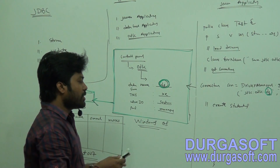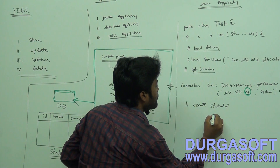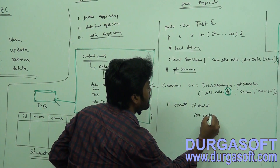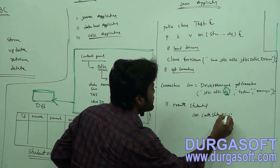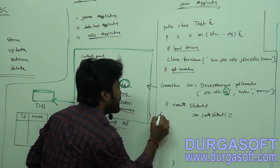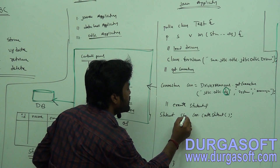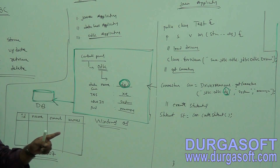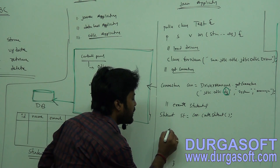There are multiple types of statements. First, you need to create a statement using connection.createStatement(). Using this statement object, you can execute your Java statements, and your ODBC layer will convert those statements into the required SQL calls.